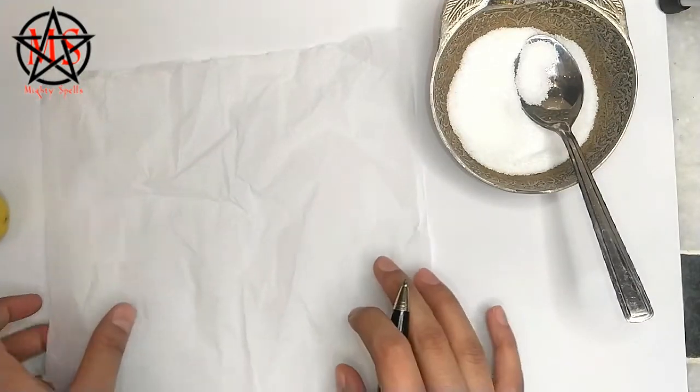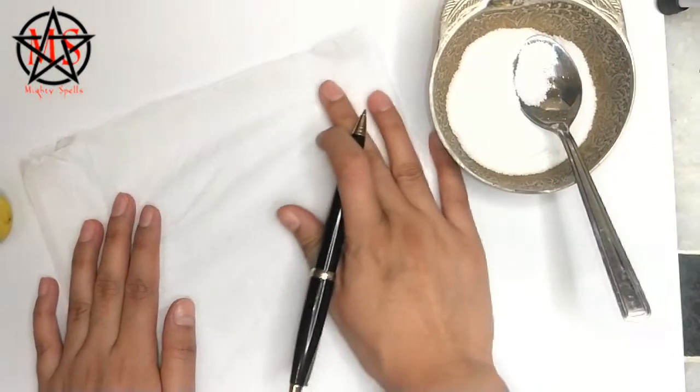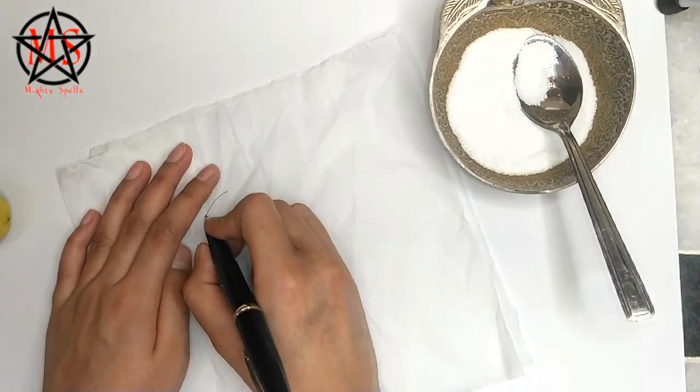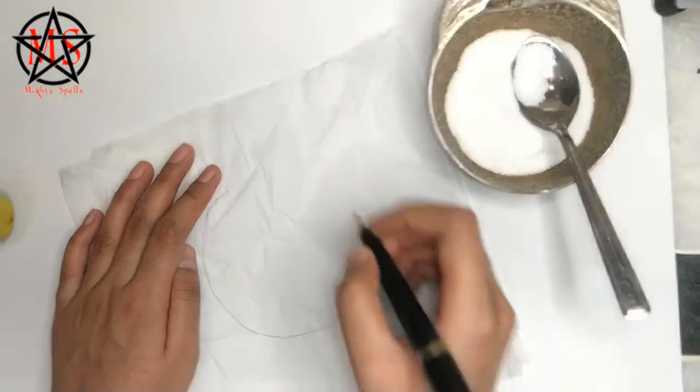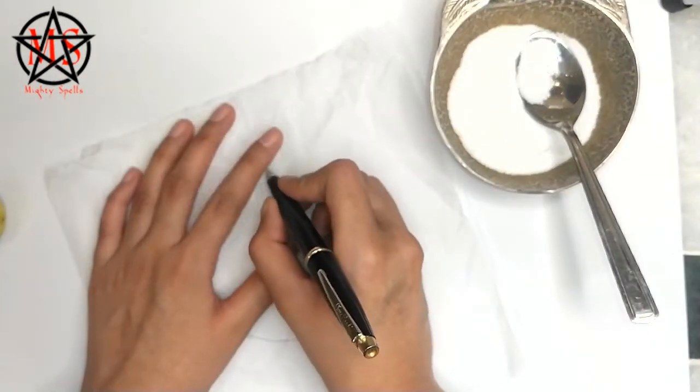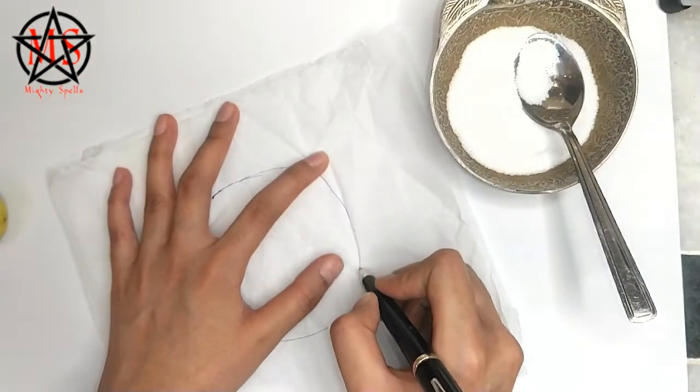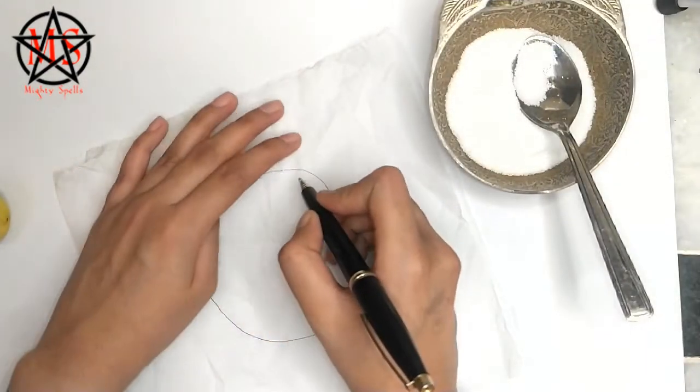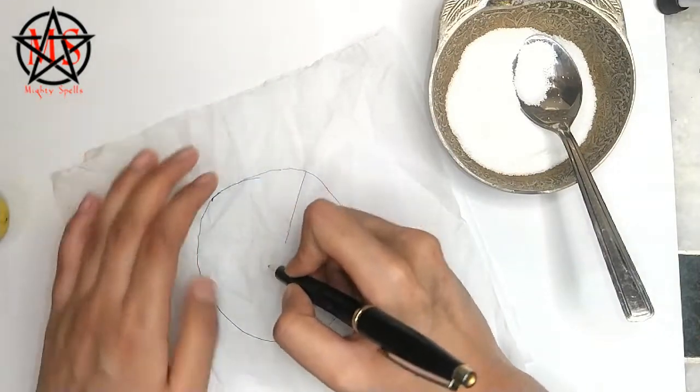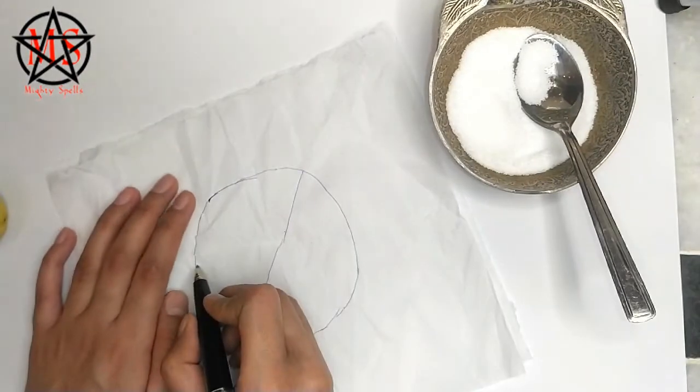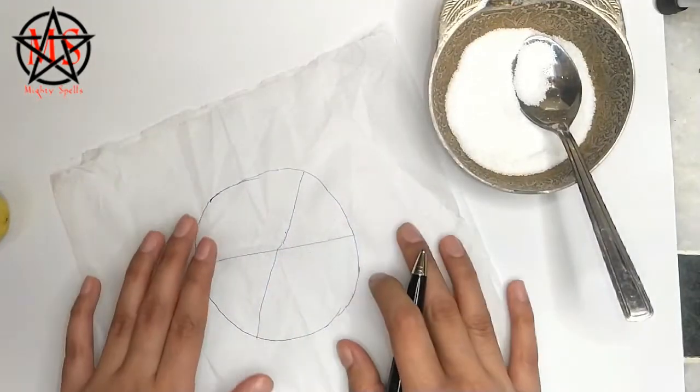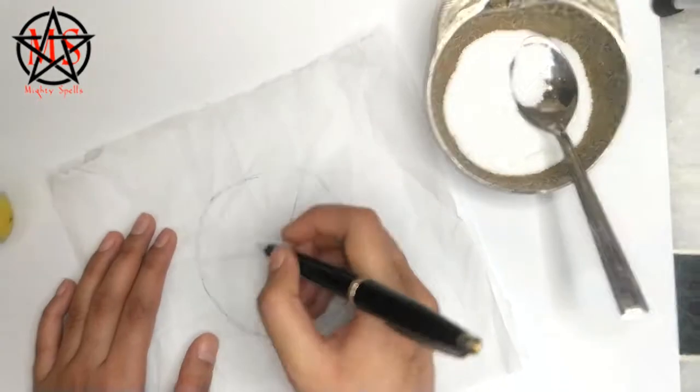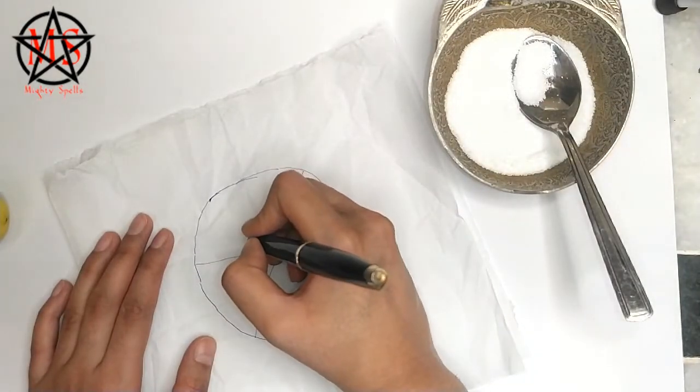After that, you have to take a piece of paper and make a big circle, just like this. Now make a cross like this, and you have to make a few letters that I am going to make, just like this.